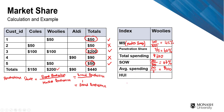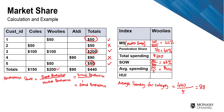For the heavy usage index, we take the average spending at Woolworths — which is 100 — divided by the average spending for the whole category. The category average is total spending of 440 divided by 5 customers, giving 88 dollars. So HUI equals 100 divided by 88, which is approximately 1.1.